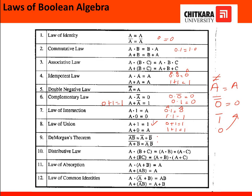Next is De Morgan's theorem, already covered in the previous video: (a·b)-bar equals ā+b̄. When we break the bar, the operator changes. Next is the distributive law: a·(b+c) can be written as a·b + a·c. Similarly, a+bc equals (a+b)·(a+c). The answer remains the same on both sides.